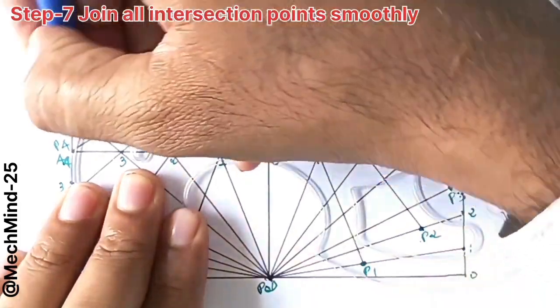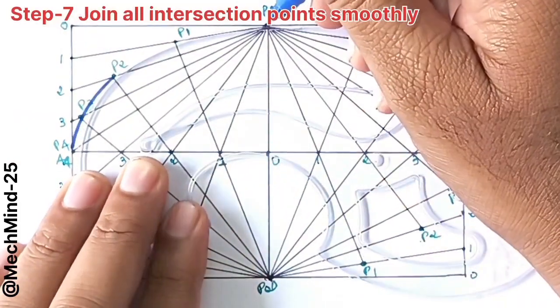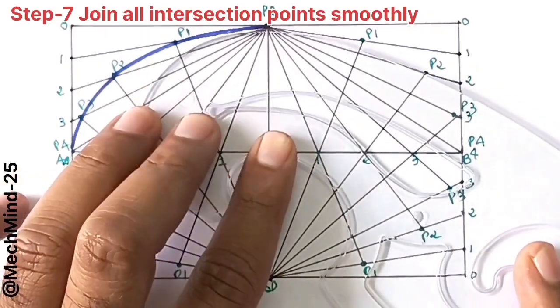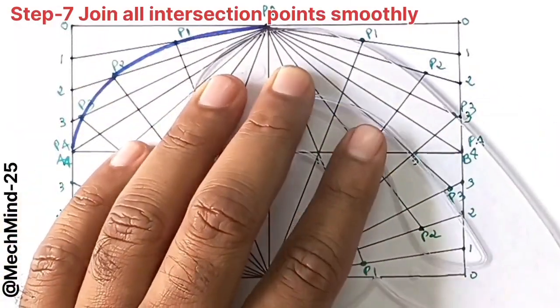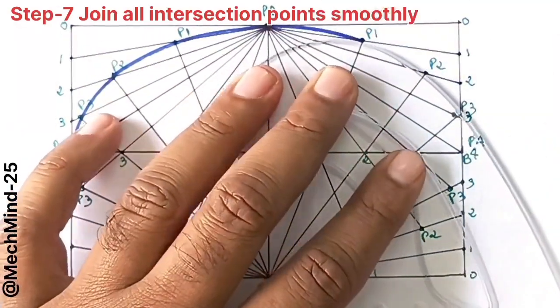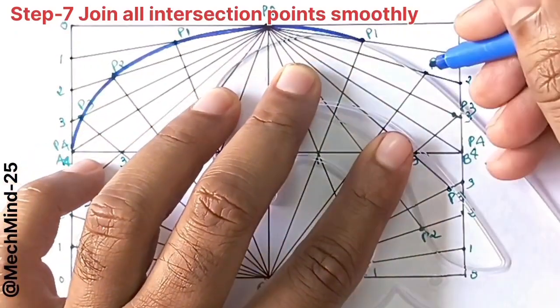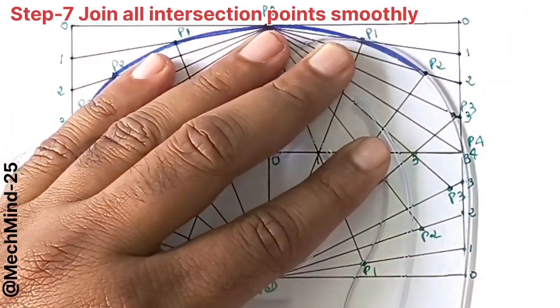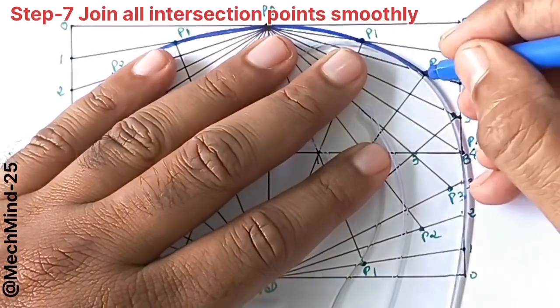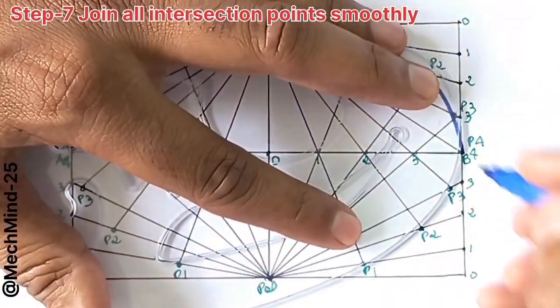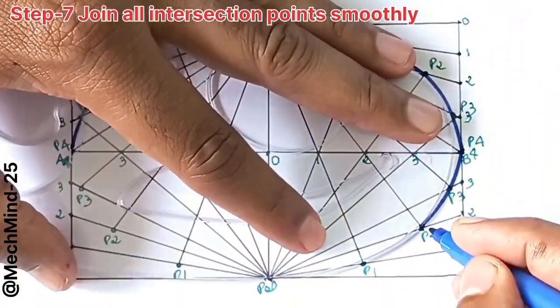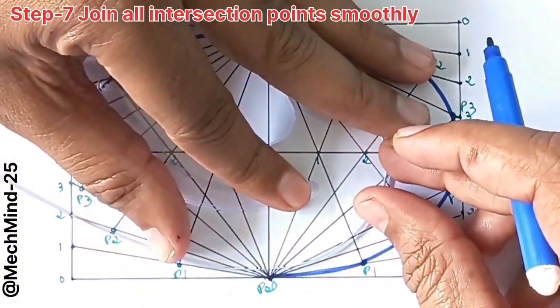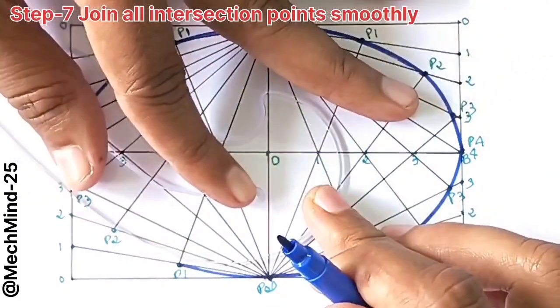Finally, take your French curve and join all these intersection points smoothly. Take care to maintain a continuous curve. Once completed, you will clearly see the shape of an ellipse inside the rectangle. Make sure your construction lines are light and your final ellipse is dark and neat.